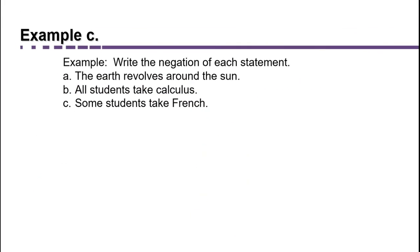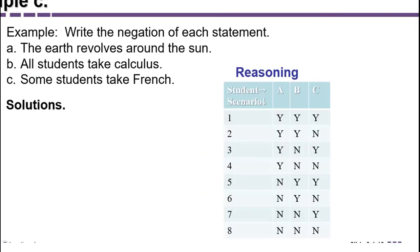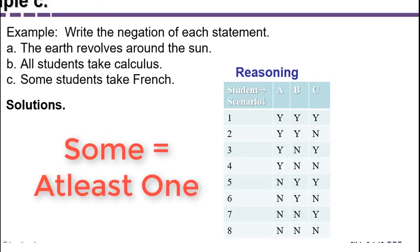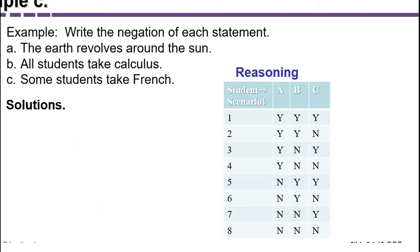Now let's look at 'some students take French.' Again, we list all the possibilities: Y means yes they're taking French, N means no. Which of these scenarios makes it true to say that some students take French? Remember, in logic, 'some' means at least one — so we include any scenario where at least one student is taking French. That gives us scenarios one through seven.